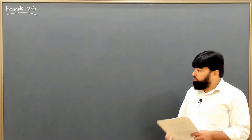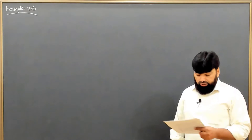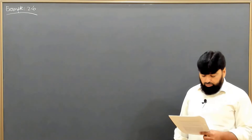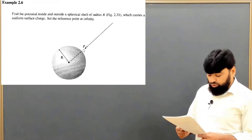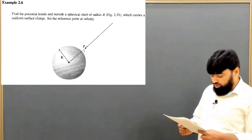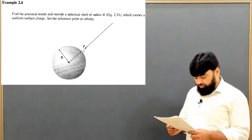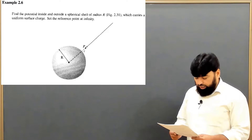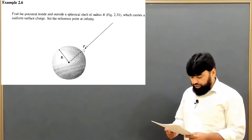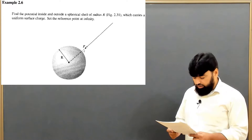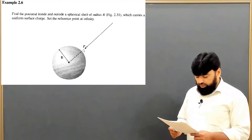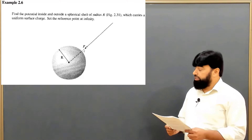Now we will solve example 2.6. Find the potential inside and outside the spherical shell of radius R which carries a uniform surface charge. Set the reference point at infinity.